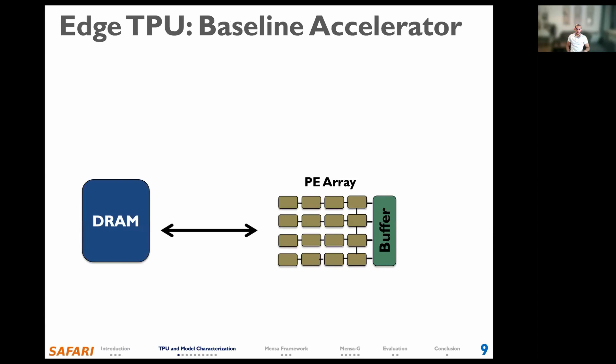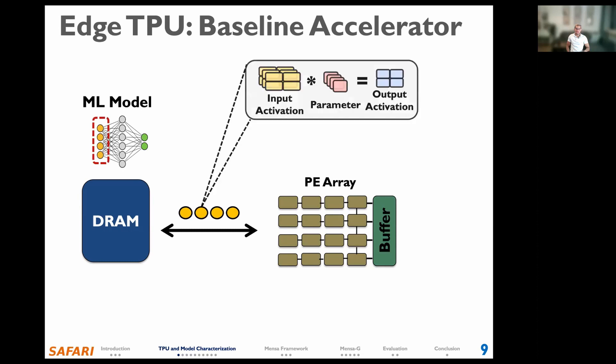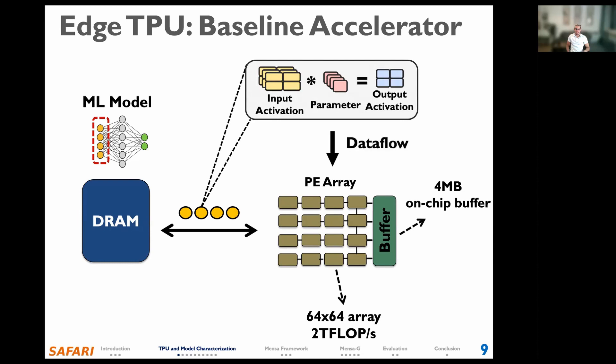We analyze Google Edge TPU models using the Google Edge TPU as the baseline accelerator. The Edge TPU is a systolic array based on a generic tile architecture. The machine learning model is stored in DRAM and fetched layer by layer, where each layer includes parameters and activations. At a high level, the accelerator has four key components: a processing element array to perform multiply-accumulate operations, a large SRAM-based on-chip buffer to hold parameters and activations, and a dataflow specifying how parameters and activations are mapped to the processing element array.